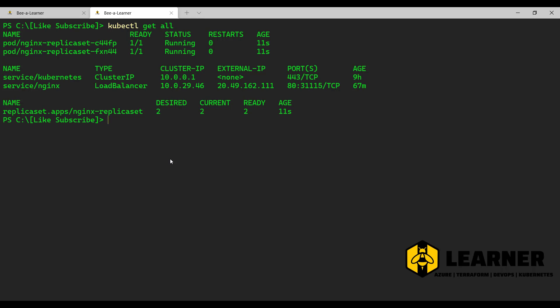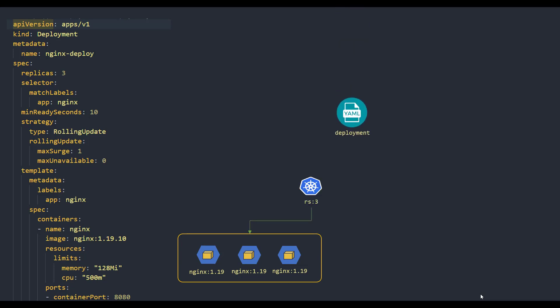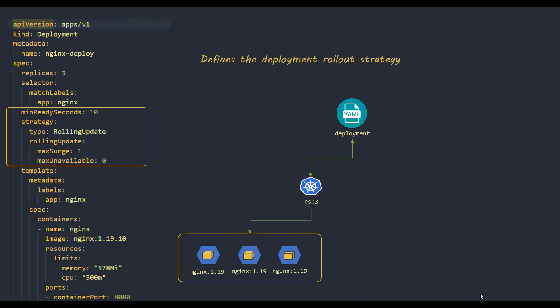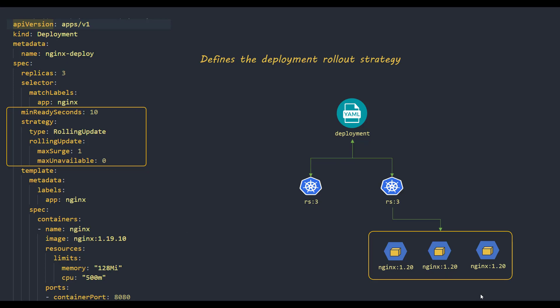Whereas with deployment, you can specify the number of instances in your replica set and define a rollout strategy. When you roll out a new version of your Docker container, you can define that you want at least one instance of your application available at any given point in time — or specify a percentage. When the deployment happens, it will create the new instances and then delete the old ones, maintaining consistency even while upgrading to a new version.